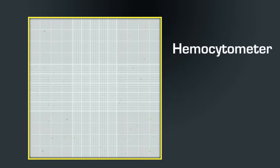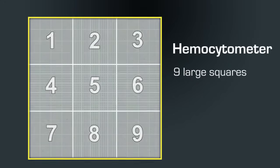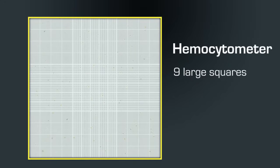Each chamber is divided into a grid pattern consisting of nine large squares. Each square has the same dimensions and contains 10 to the negative fourth power milliliters of suspension.